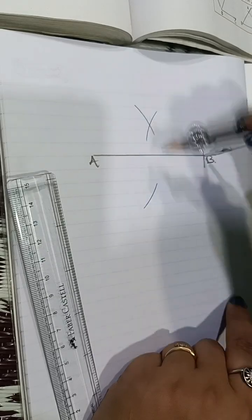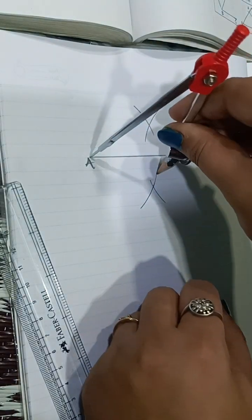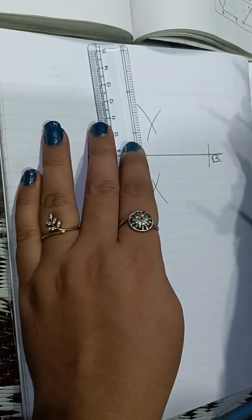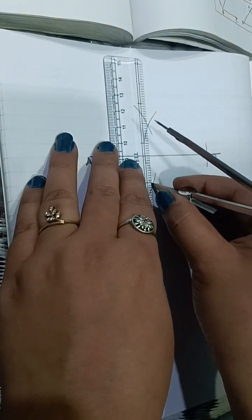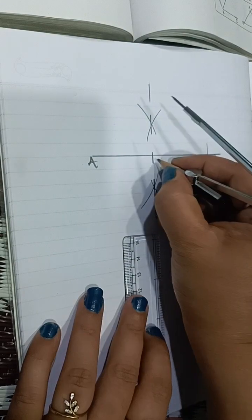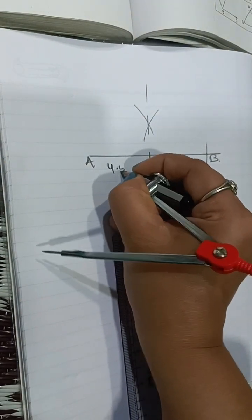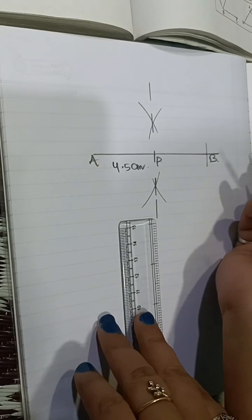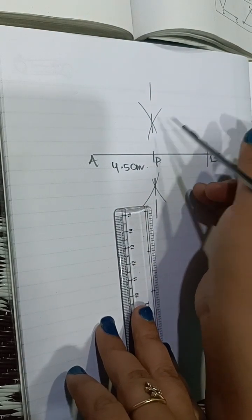From B, take an arc from top and bottom. Now AP is 4.5 cm — this is the midpoint and this is P. Draw a ray perpendicular to AB at P using the set square.